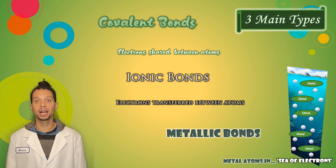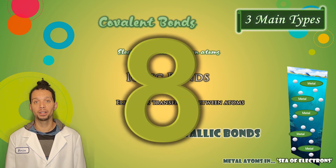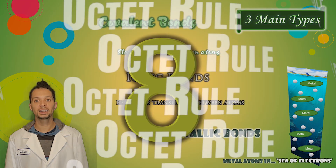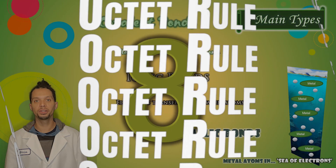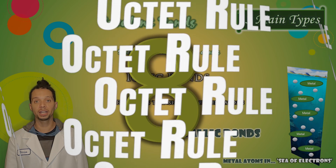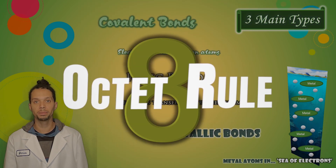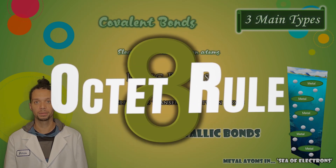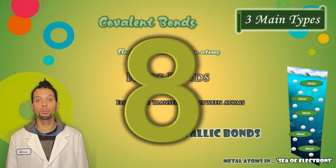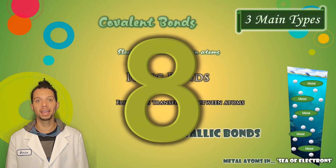The driving force behind why atoms will either share, transfer, or float in electrons is the command that all atoms follow, which is the octet rule. The octet rule states that atoms will either gain, lose, or share electrons until they are surrounded by eight valence electrons. Group 18 noble gas elements are already surrounded by eight valence electrons, and that is why they do not bond with other elements.